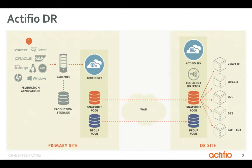Number one, Actifio software captures application data from physical machines, VMs, or in public cloud using Fibre Channel or iSCSI. Number two, incremental forever local backups minimize backup windows and production system impact while assuring application consistency using application and OS-integrated APIs.